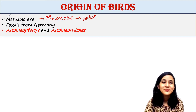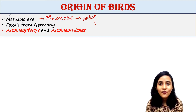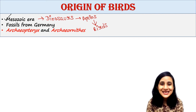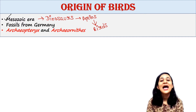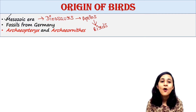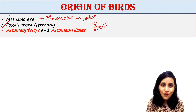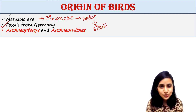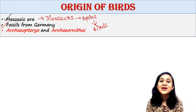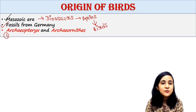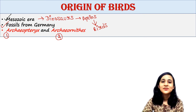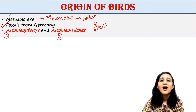It is believed that birds have evolved from reptiles in this Mesozoic era. Two fossils were found from Germany, and from those two fossils we could know about this truth that birds evolved from reptiles.